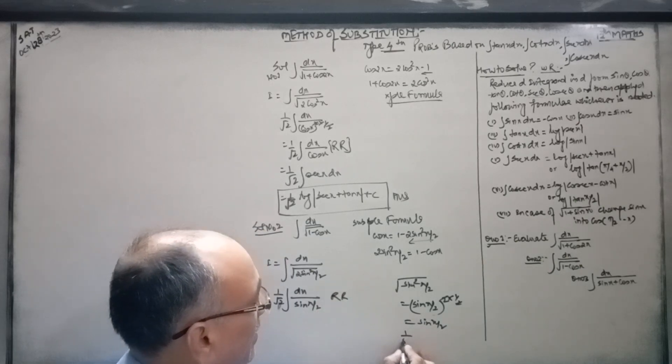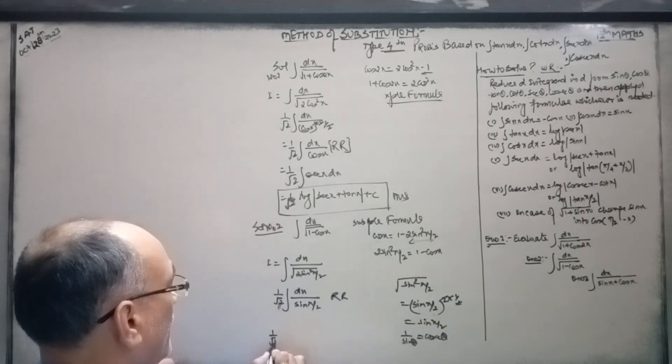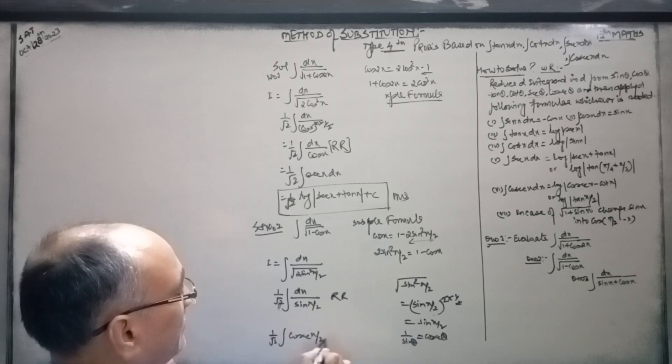1 upon sin theta is equal to cosec theta. 1 upon root 2. This integration of cosec x by 2.